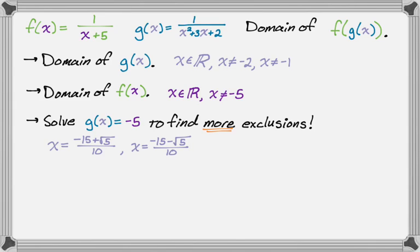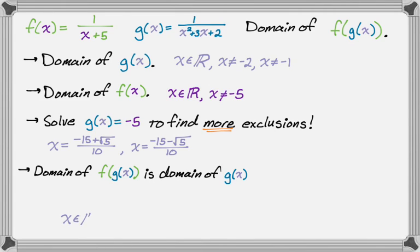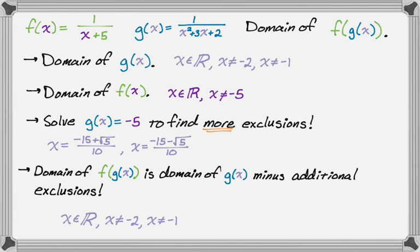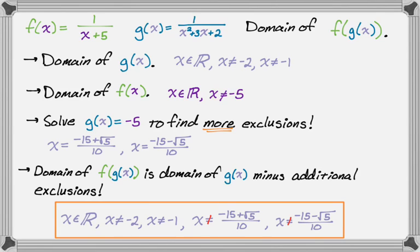And then the final answer that we're looking for, so the domain of f of g of x is going to be, first, the domain of g(x), so that we found was x is an element of the reals, x is not negative 2, x is not negative 1. So those will never work out. And then we also had to subtract any of the additional exclusions. So additional exclusions we found were those other two x values. So we also put in x is not negative 15 plus radical 5 over 10, and x is not negative 15 minus radical 5 over 10. And that's the whole thing, all right?